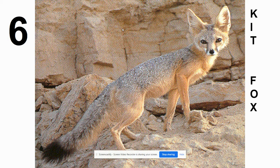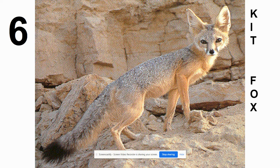Number six is the kit fox. One of the problems with common names is that different regions might have different names for the same creature. Here we see a larger ear, which indicates living in a hotter climate. Animals that live in hotter climates, like the desert, have ears that radiate or release heat from their body as a way to stay cool. Other animals with thick coats don't sweat like humans do and don't do as well when it's really hot.